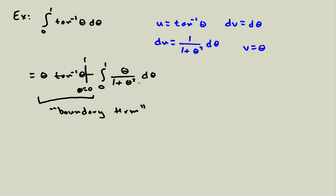Looking at the remaining integral, we can see it's solvable by u-substitution. We get to use more than one technique: integration by parts first, then u-substitution second. Combining techniques is a powerful way to solve integrals. I notice I have theta-squared in the denominator and theta d-theta on top. I'll choose w equals theta-squared — I'll call it w instead of u since I've already used u — and then dw equals 2 theta d-theta.